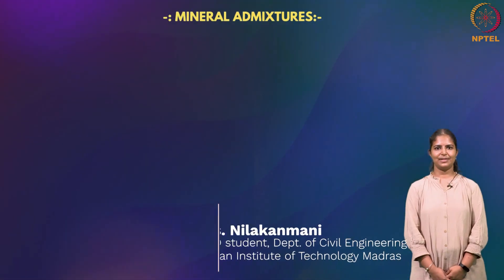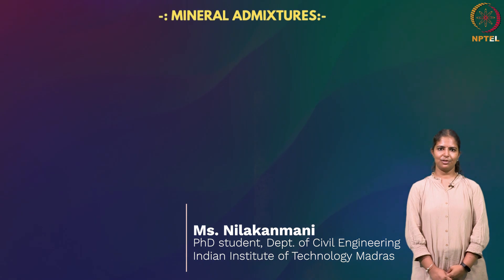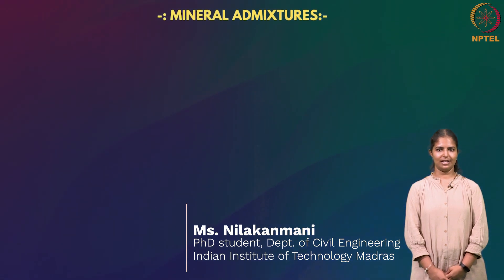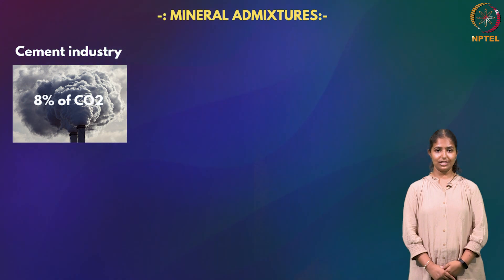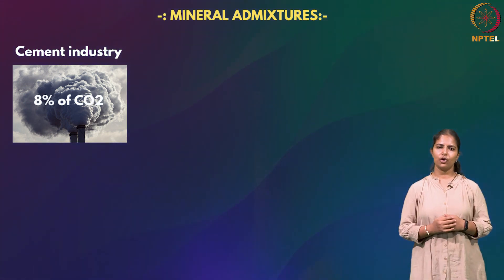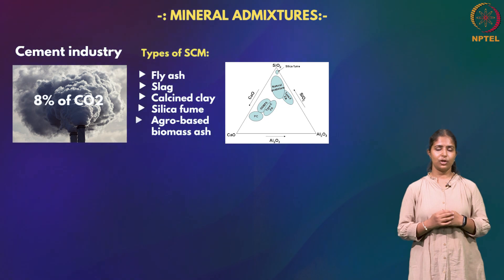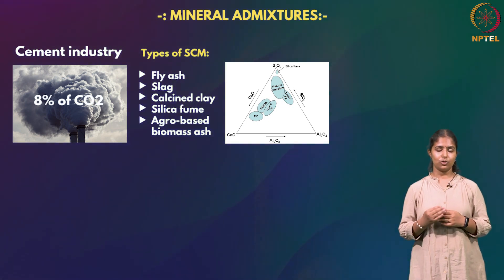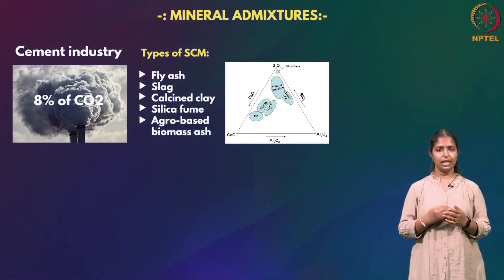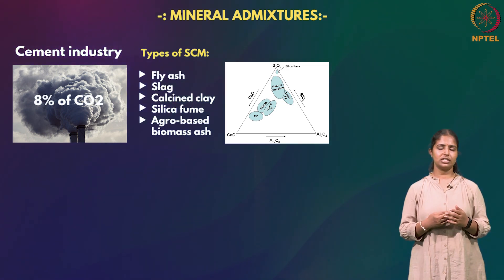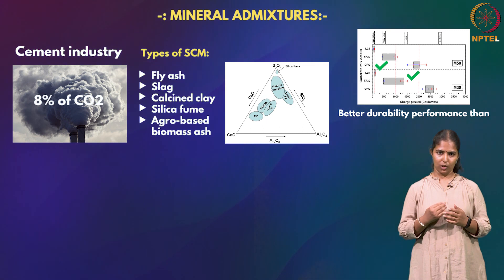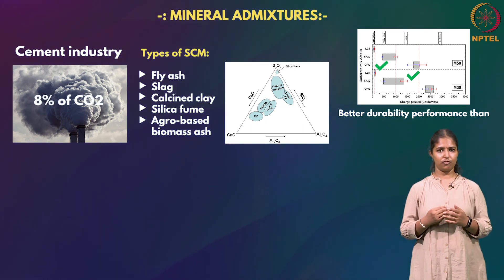This is Neela Kanmani, a PhD student from the BTCM division, Department of Civil Engineering, IIT Madras. We all know that the cement industry alone emits 5 to 8% of anthropogenic carbon dioxide emissions, and the production of 1 ton of ordinary Portland cement emits 1 ton of CO₂ into the environment. Partial replacement with SCMs — also known as mineral admixtures — like silica fume, rice husk ash, sugarcane bagasse ash, fly ash, and slag can reduce CO₂ emissions and enhance durability performance as well.